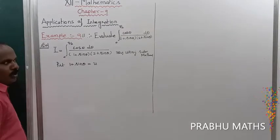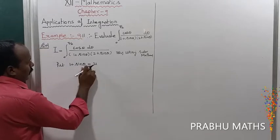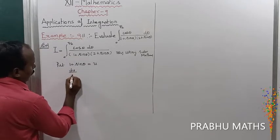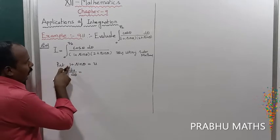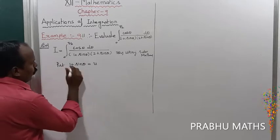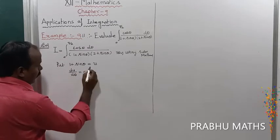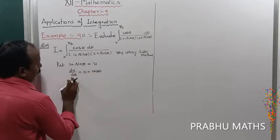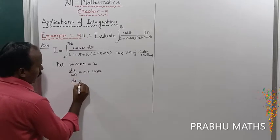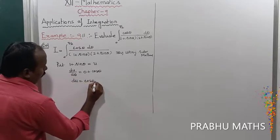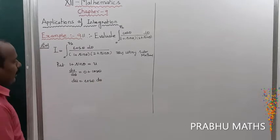Differentiate with respect to θ. So du/dθ: the derivative of 1 is 0, and the derivative of sin θ with respect to θ is cos θ. Therefore du = cos θ dθ.